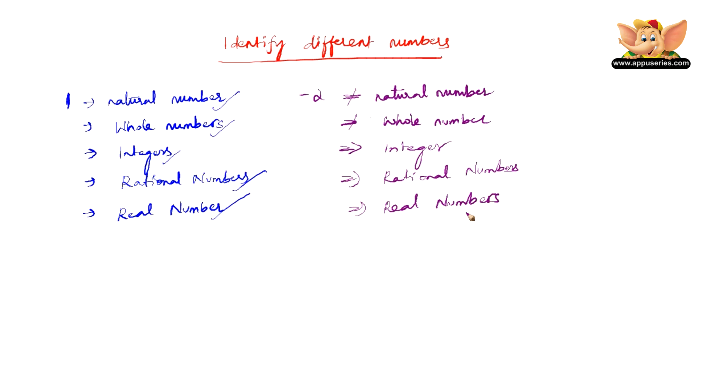Therefore minus 2 is a real number, a rational number, an integer, but it is not a whole number, and it is not a natural number.